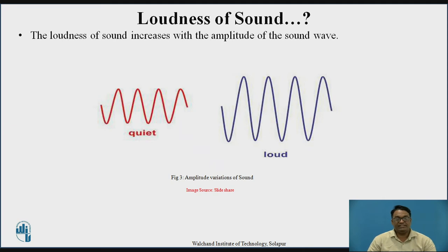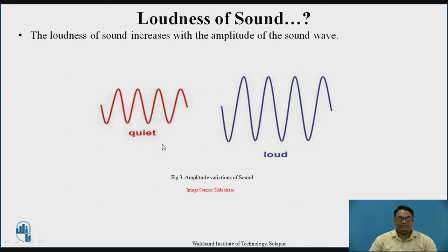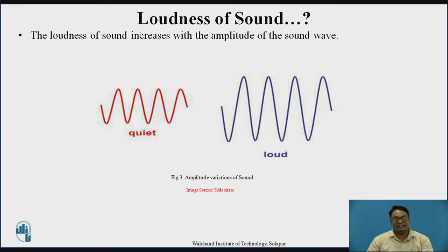The next point is loudness of sound. Whenever we consider sound, we have to consider this basic parameter called loudness. Loudness of sound increases with the amplitude of the sound. There are two sound waves shown: one has less amplitude and the other has maximum amplitude. The sound wave with less amplitude denotes a quiet sound, and the wave with high amplitude denotes a loud sound. Therefore, loudness of sound is directly proportional to the amplitude of the sound.